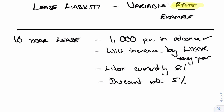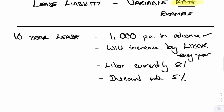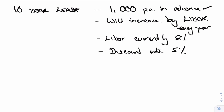Hey everybody, I want to do another lease liability example using variable payments, but using a rate. Remember last time it was the index, but this time we're using a rate. So let's have a look at this question. It's a 10-year lease, 1,000 per annum in advance, but it will increase by LIBOR every year, and LIBOR is currently 2%.